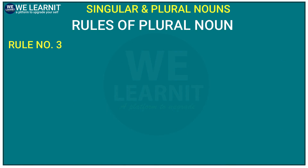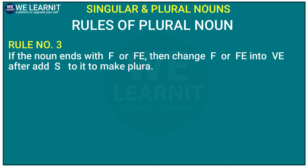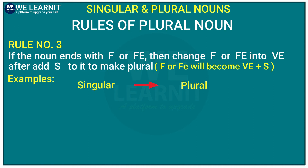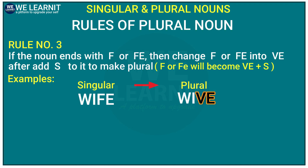Now, let's move to the third rule of plural nouns. If the noun ends with -f or -fe, then we need to change -f or -fe into -ve, and then add -s. So the letters -f and -fe will be written as -ve, and then we add -s. For example, 'wife' ends with -fe. As per the third rule, we change -fe to -ve and add -s, so 'wife' becomes 'wives'.